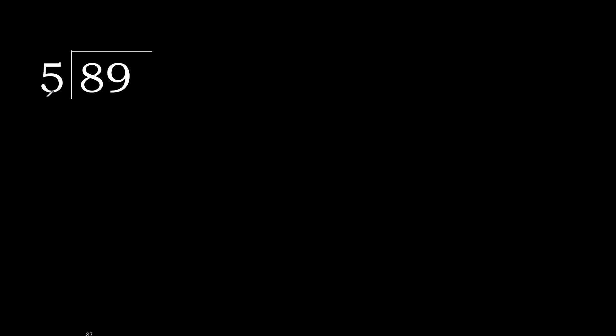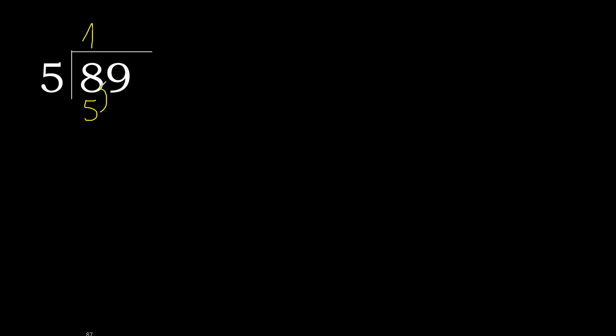89 divided by 5. Starting with 8: 5 multiplied by which number is nearest to 8 but not greater? 5 multiplied by 2 is 10 — that's greater. 5 multiplied by 1 is 5 — that's not greater. So 8 minus 5 is 3.